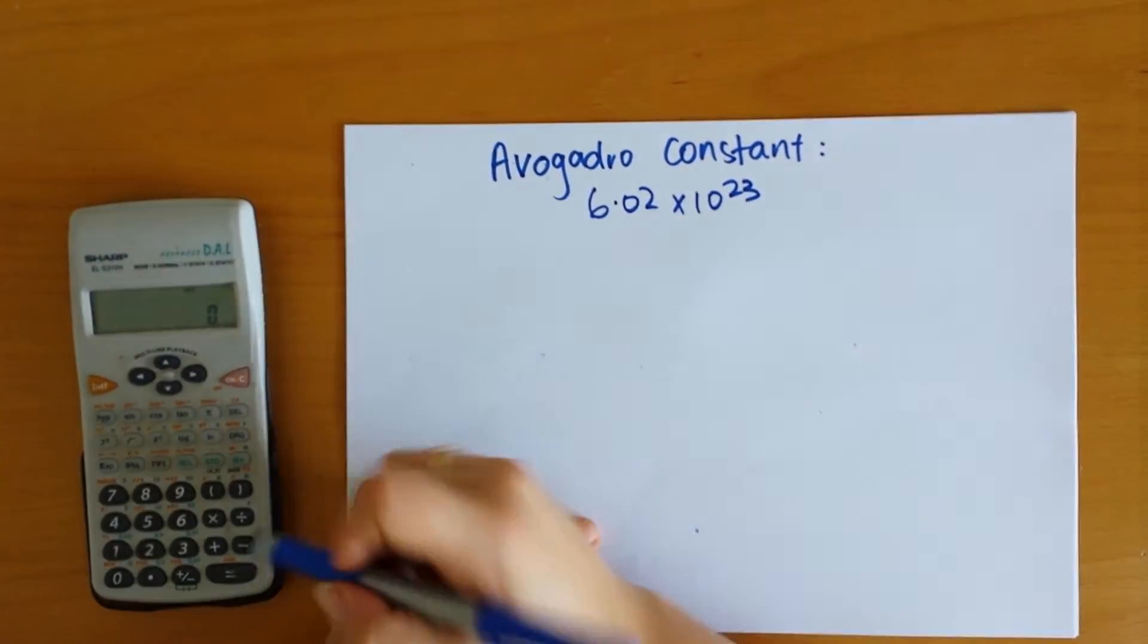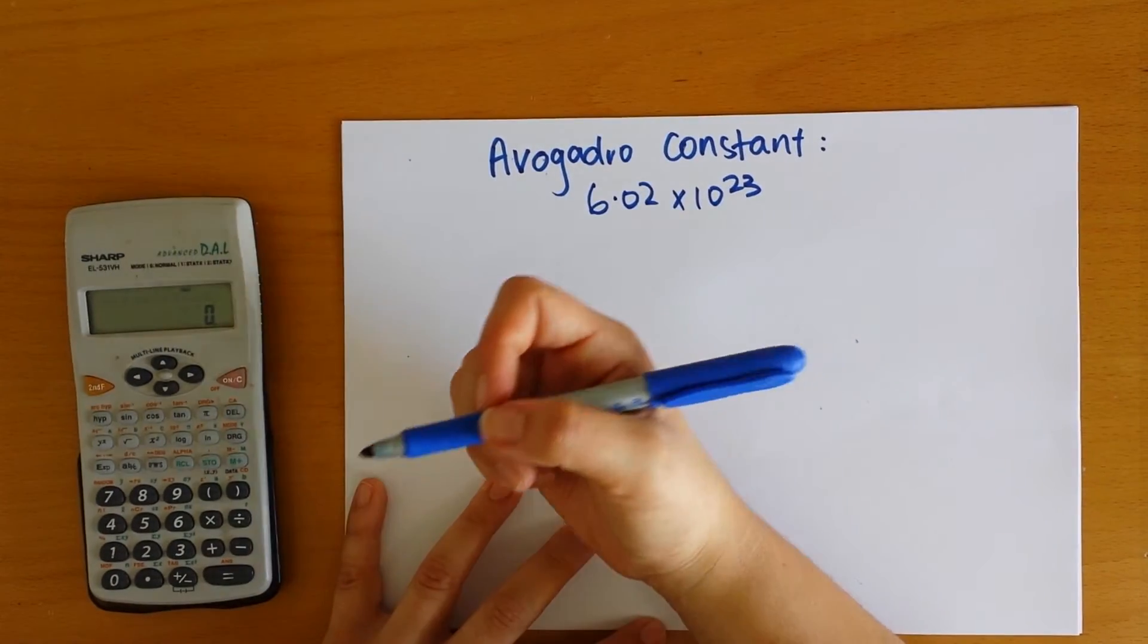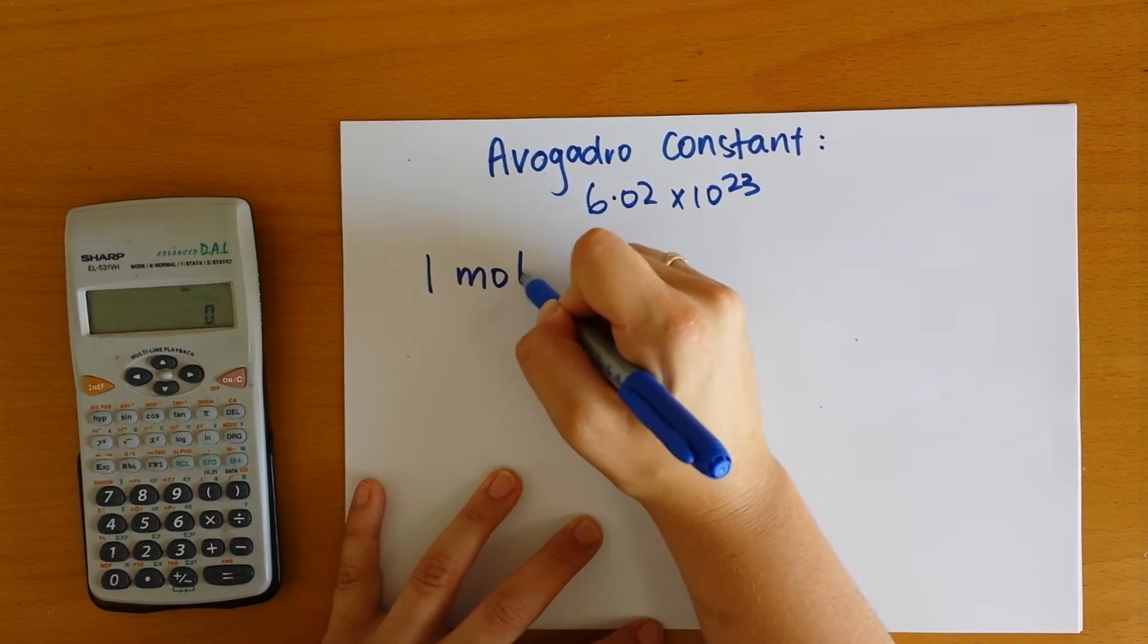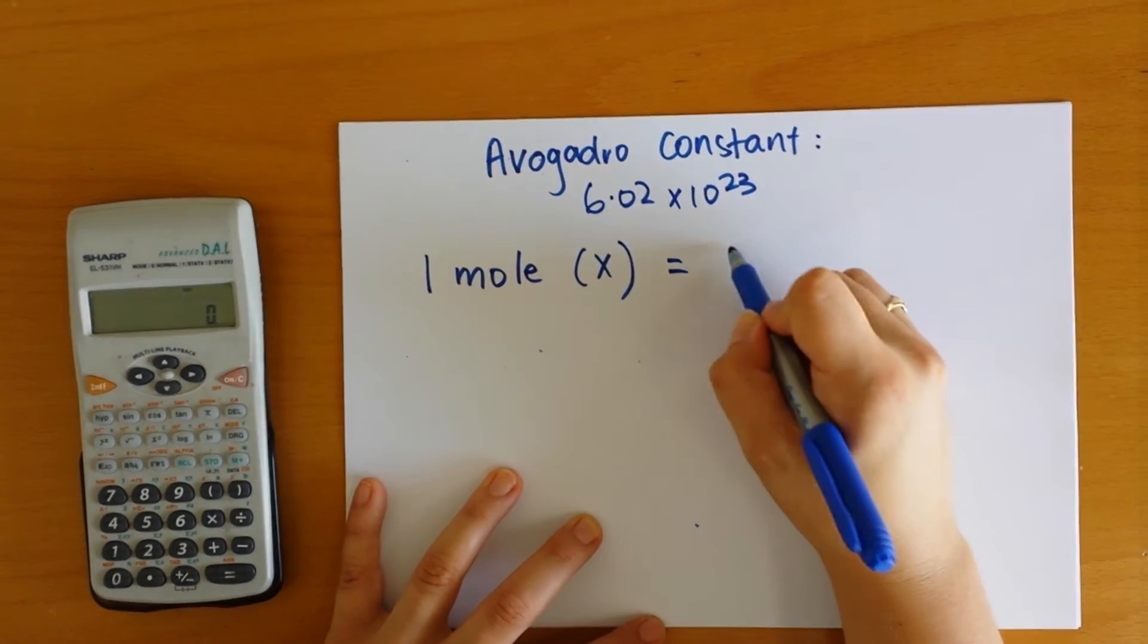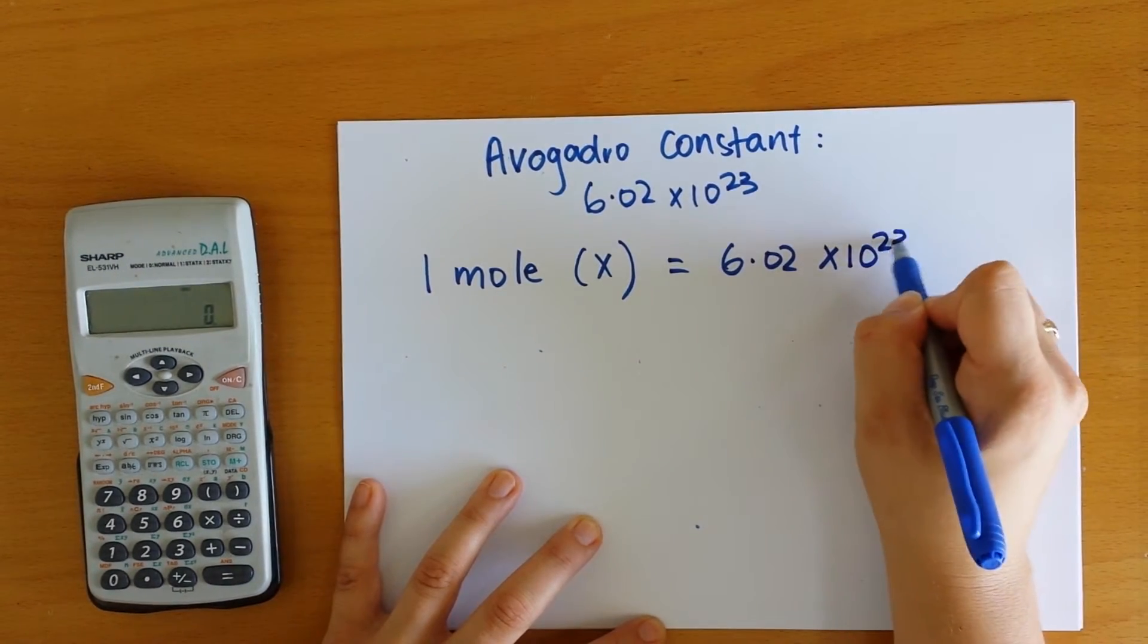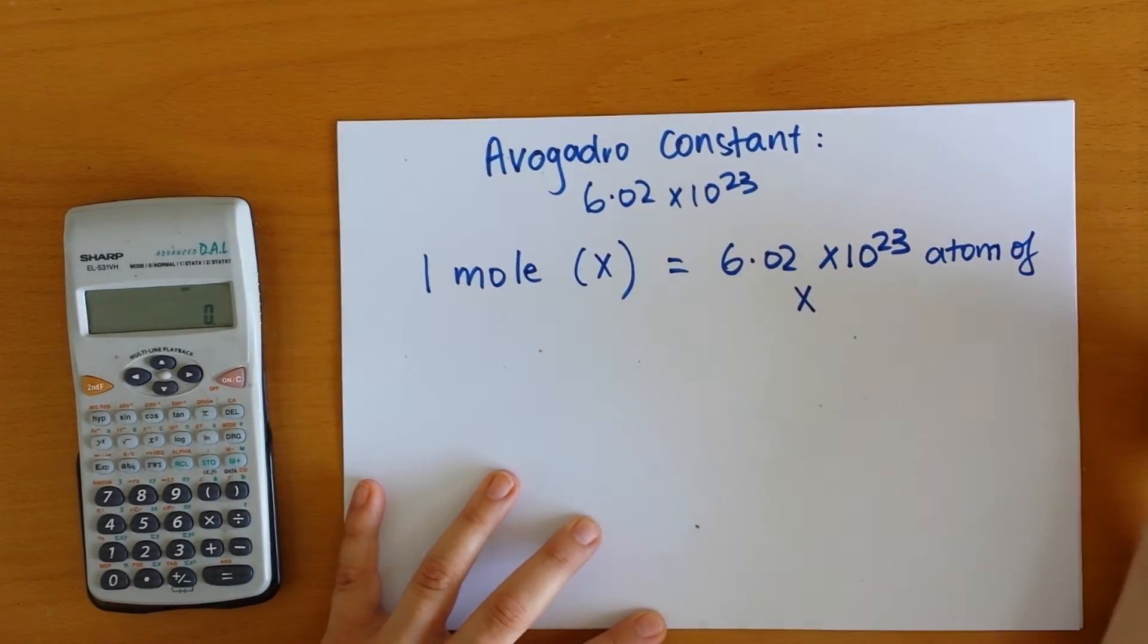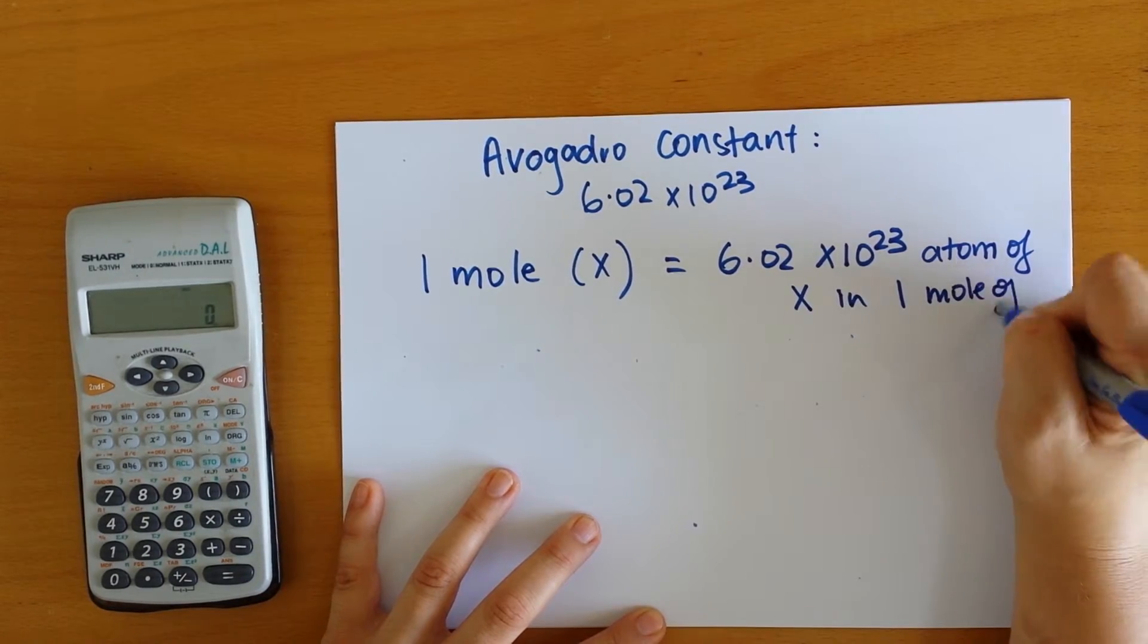What that means in terms of chemistry is it's a way that we can actually calculate the amount of atoms that we have present in a particular defined sample. In this case, we calculate out the mole of whatever substance, which means that we have 6.02 times 10 to the 23 atoms of X in one mole of X.